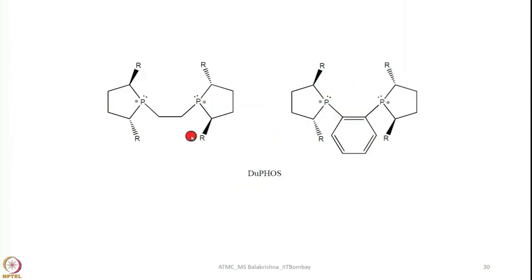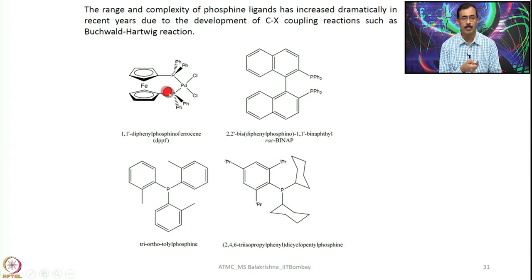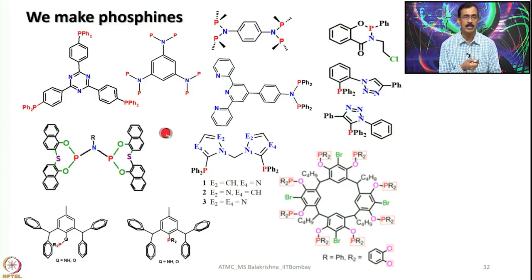This is an interesting chiral phosphorus ligand called DUPHOS, and this quite well-known one is called DPPF — bis(diphenylphosphino)ferrocene — widely used in catalysis. I have shown one palladium complex of this, and here we have BINAP. One can also have bulky groups on the top position, and also cyclohexyl groups on phosphorus along with a bulky group, so that we can stabilize low coordination numbers. These are some of the phosphines we made in our group.